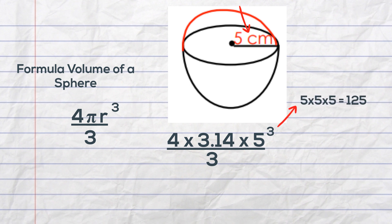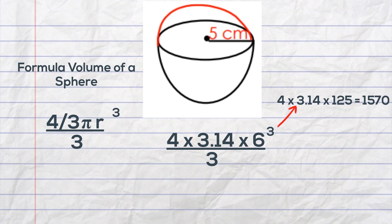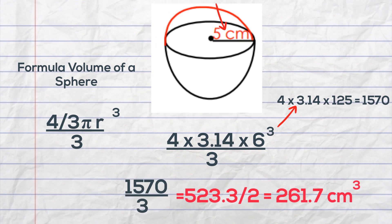When I multiply the first part four times pi times the radius cubed I get 1570. I divide that by three and the volume of the sphere is 523.3. And then I'll divide this by two to give me the volume of the hemisphere of 261.7 centimeters cubed because volume is cubed.